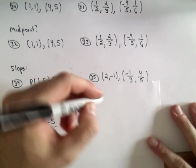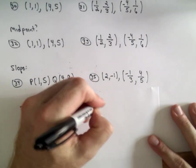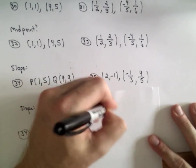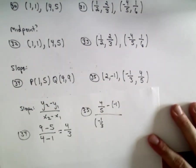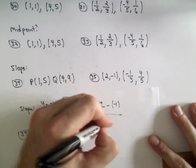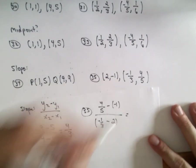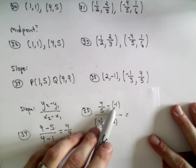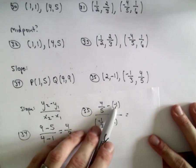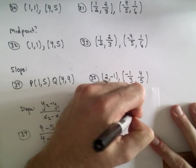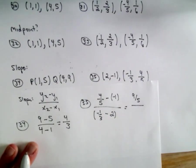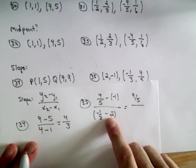And for 35, okay, so change in y, we've got 4 fifths minus negative 1 over negative 1 third minus 2. So that's 4 fifths plus 1. That's 4 fifths plus 5 over 5. That would be 9 over 5. And for the second, or in the denominator, 1 third minus 2. Well, we could write 2 as 6 thirds.